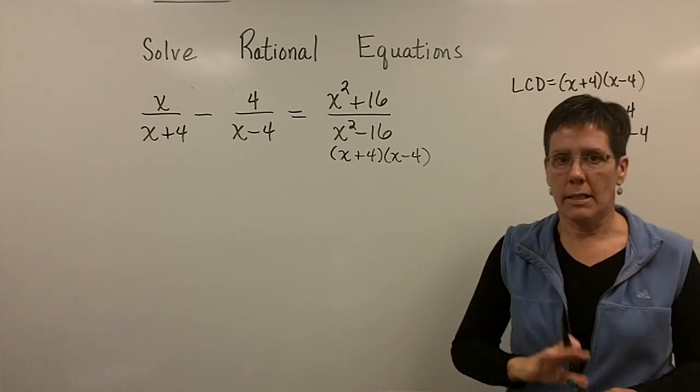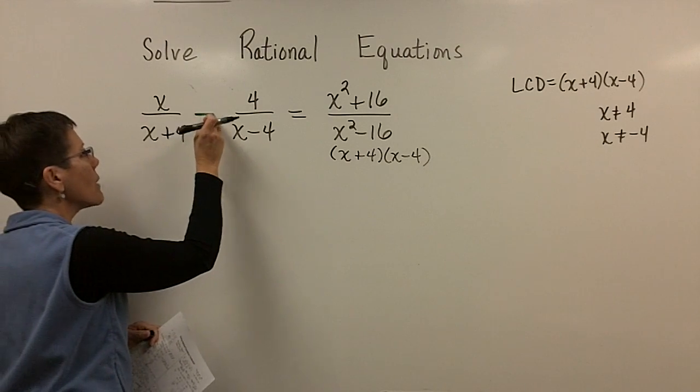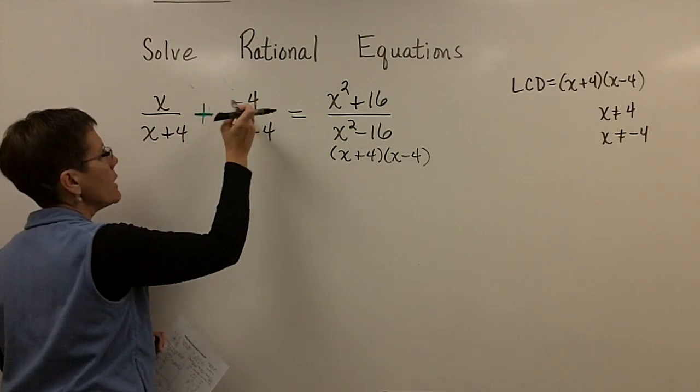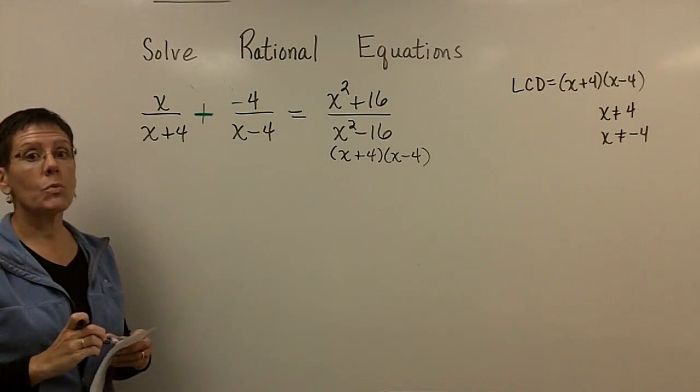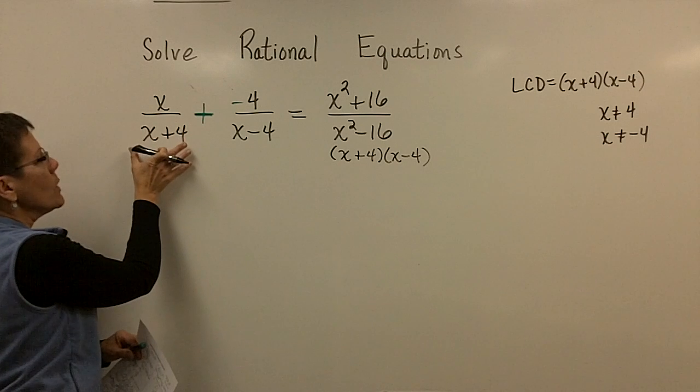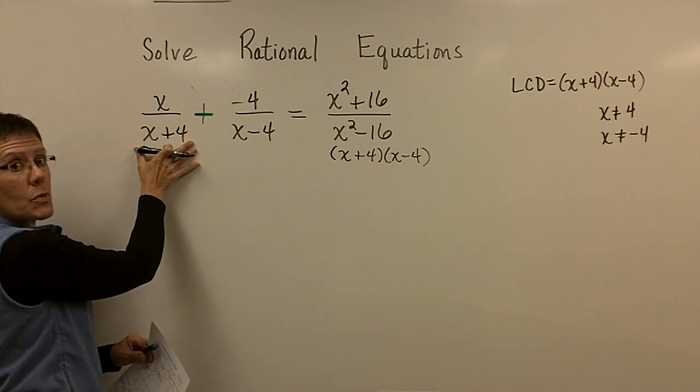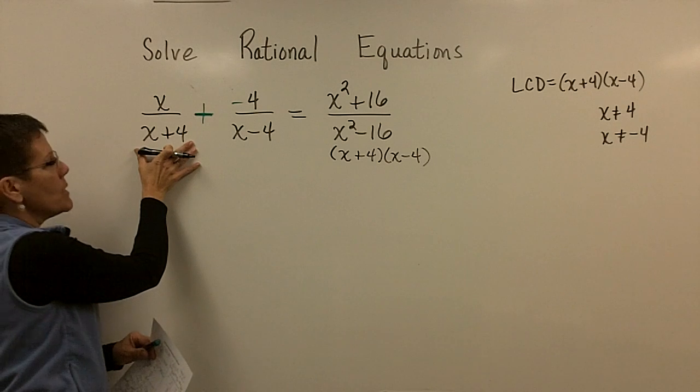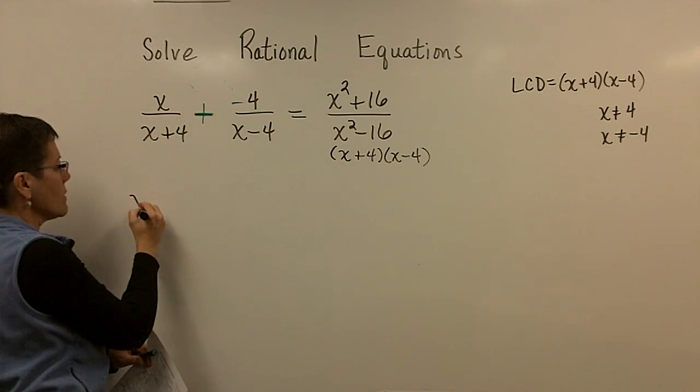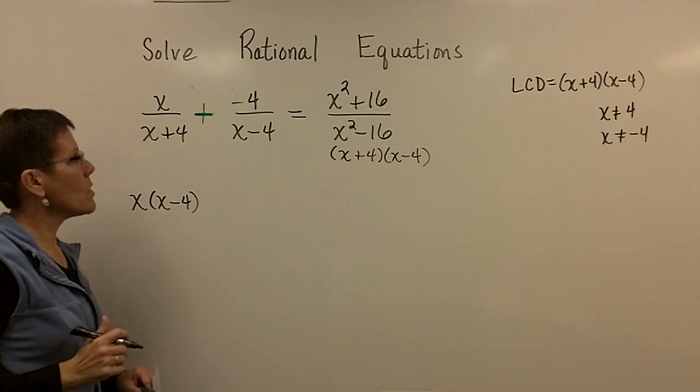And then just over here as a side note, I might tell myself that my restrictions are that x cannot equal 4 and x cannot equal negative 4. So when I'm all done with this problem, let's check and see if that happens. I do have to be very cautious with this minus sign right here. It is plus a negative 4 times whatever I have to multiply that numerator by.